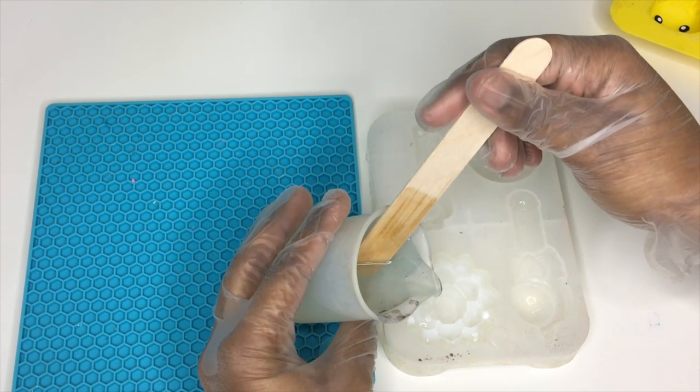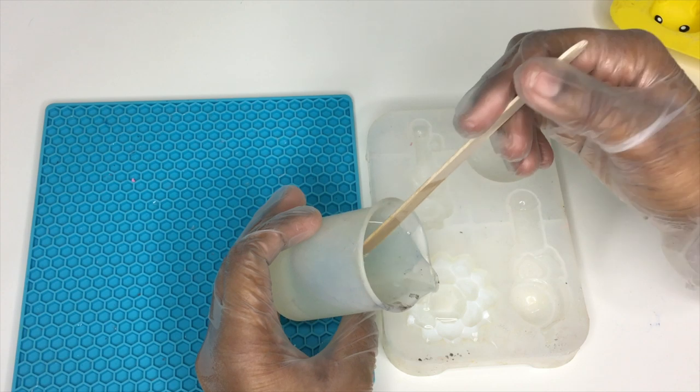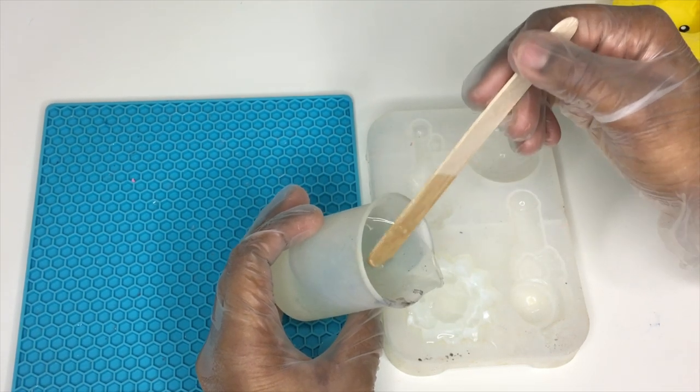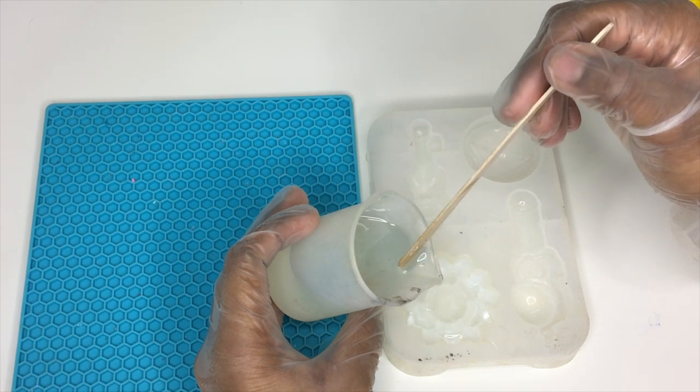So now I'm going to start filling my molds with resin. I only fill them about three-quarters of the way because I want to make sure that I have enough space for the backings which will be shown later on in the video.